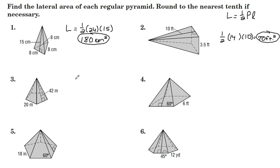Number 3, we have a pentagon for the base. That means the perimeter is 100. Slant height is 42. One half of 42 times 100 is 2100 square meters.